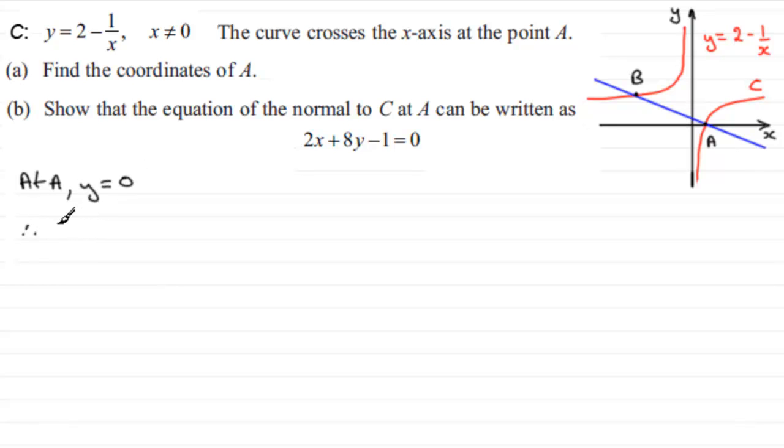what we're going to have is 0 equals 2 minus 1 over x, if we substitute it into our equation. And then we could add 1 over x to both sides, so therefore 1 over x equals 2. And if we then multiply both sides by x, we get 1 equals 2x, divide now by 2, and you end up with x equaling 1 half.